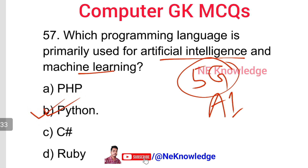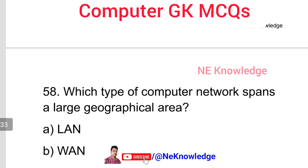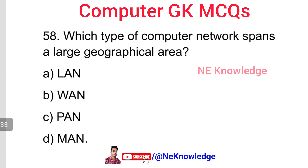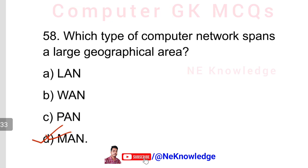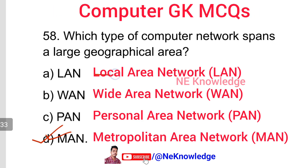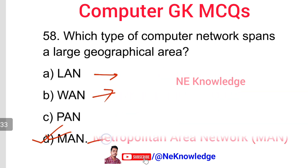Question number 58: Which type of computer network spans a large geographical area? A Local Area Network (LAN) covers a building or floor. A Metropolitan Area Network (MAN) covers a city area. A Wide Area Network (WAN) spans a large geographical area.